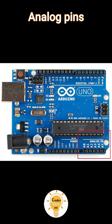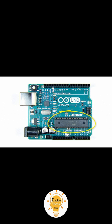Analog Pins: The Arduino UNO board has six analog input pins, A0 through A5. These pins can read the signal from an analog sensor like a humidity sensor or temperature sensor and convert it into a digital value that can be read by the microprocessor.